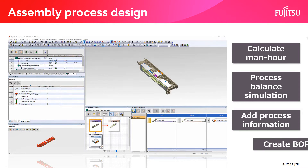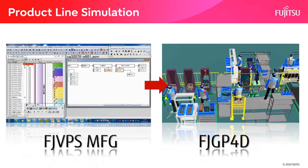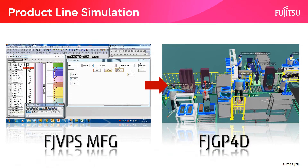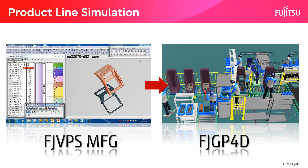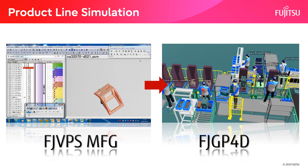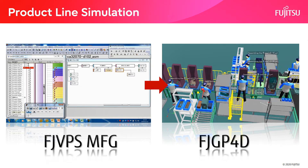Equipment used and a list of parts used can also be reviewed. The operating procedure and process information verified by FJVPSMFG can be used for manufacturing line layout simulation by passing it to FJGP4D.